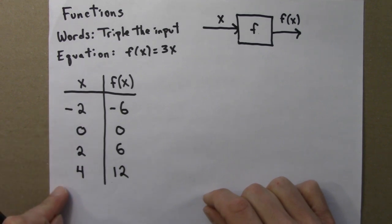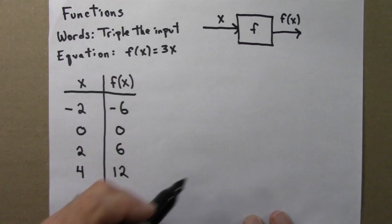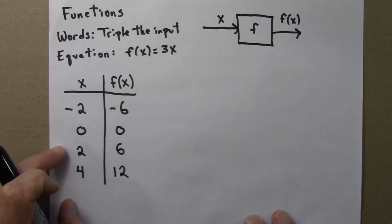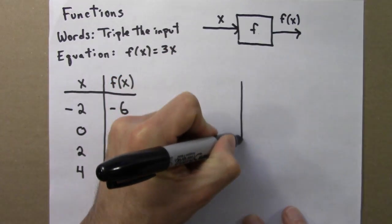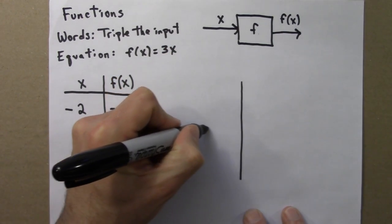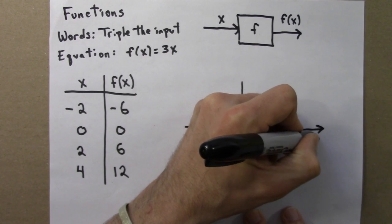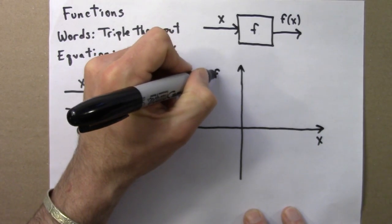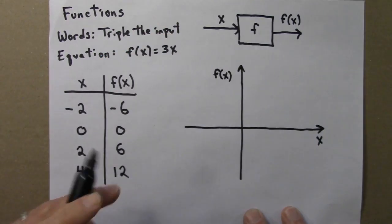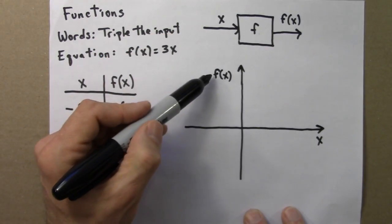So I can take these pairs of numbers and plot them on an xy plane. Let me sketch what that would look like, and then I'll show you a nicer printout. So first I might draw these axes. So the y, or the vertical, will be f(x), the output.